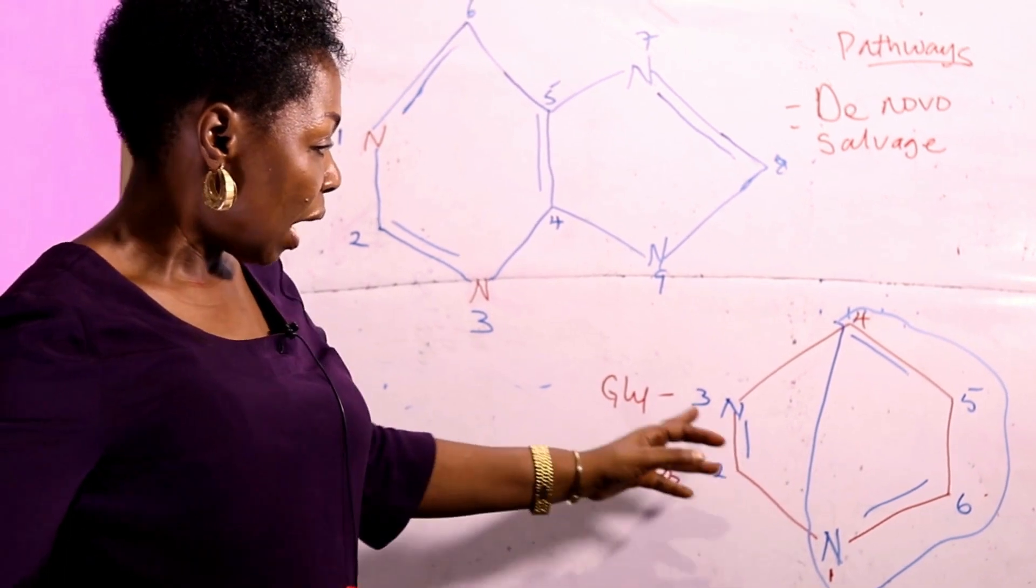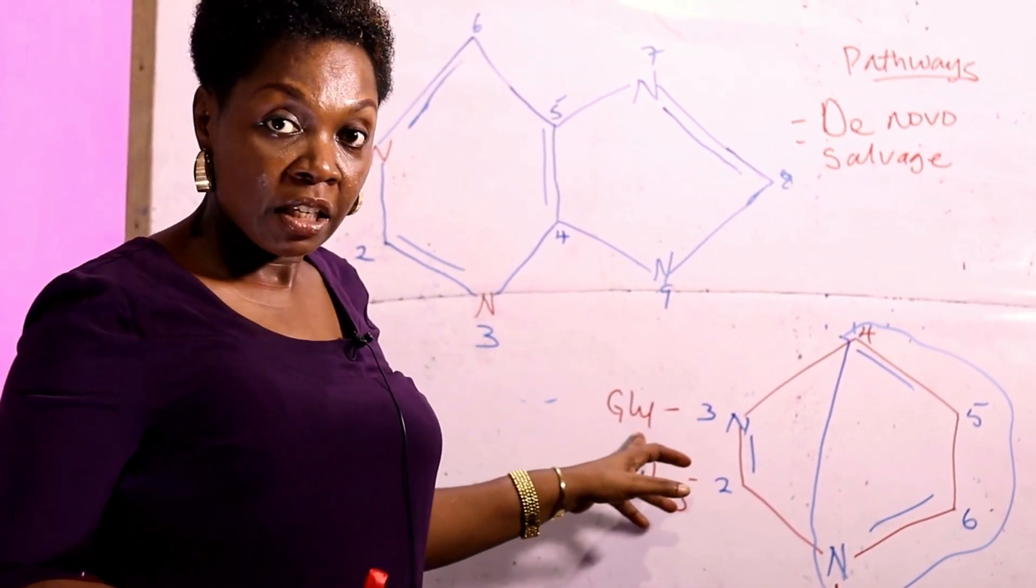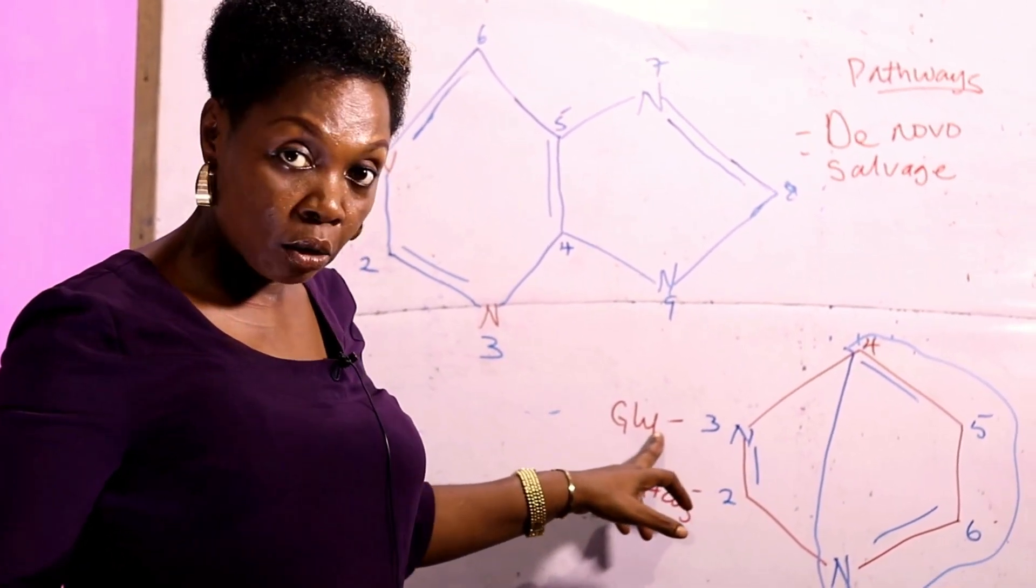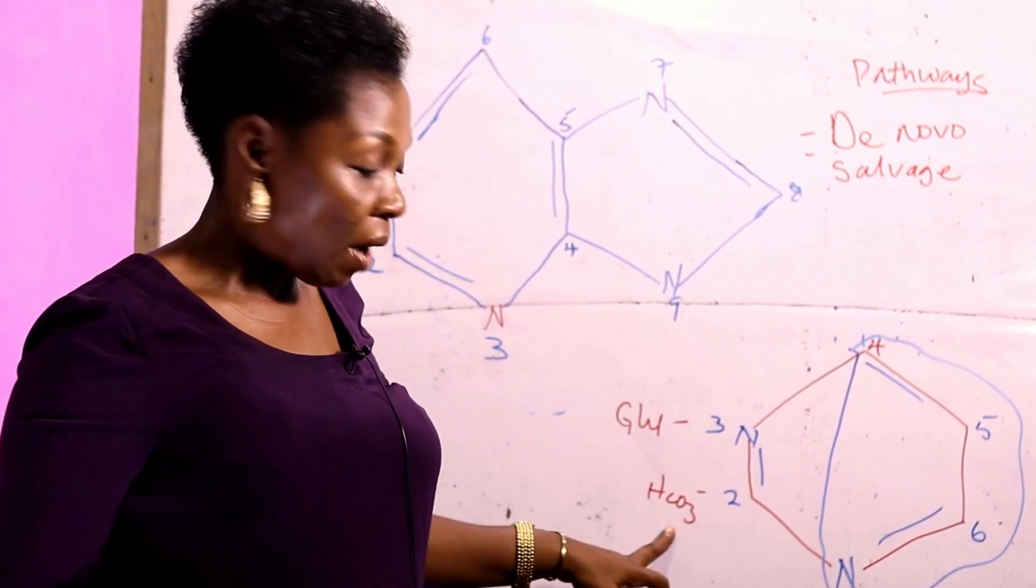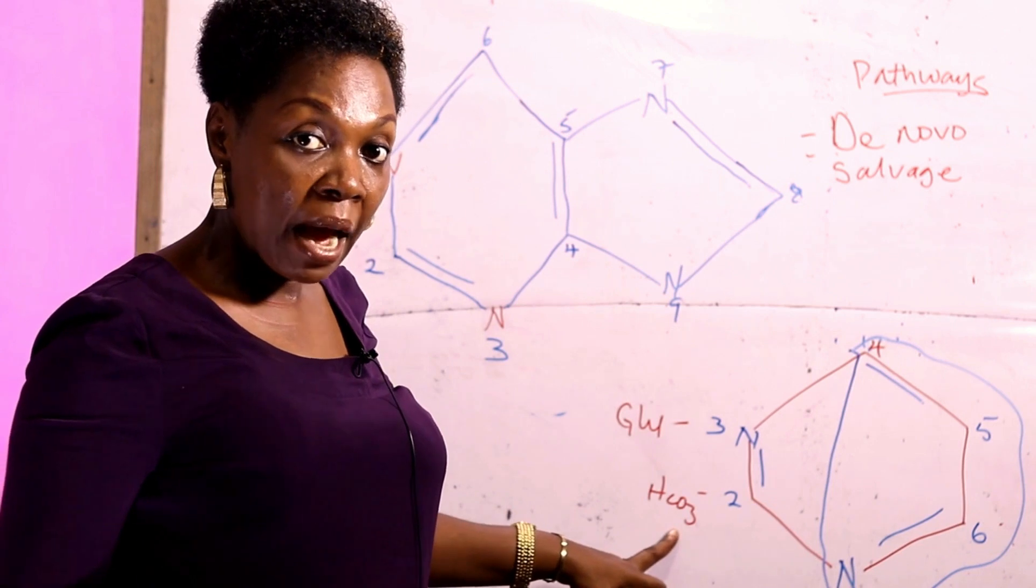a six-membered ring structure. The source of carbon and nitrogen: carbon 3 is from the amino acid glutamine, while carbon 2 is furnished by bicarbonate,